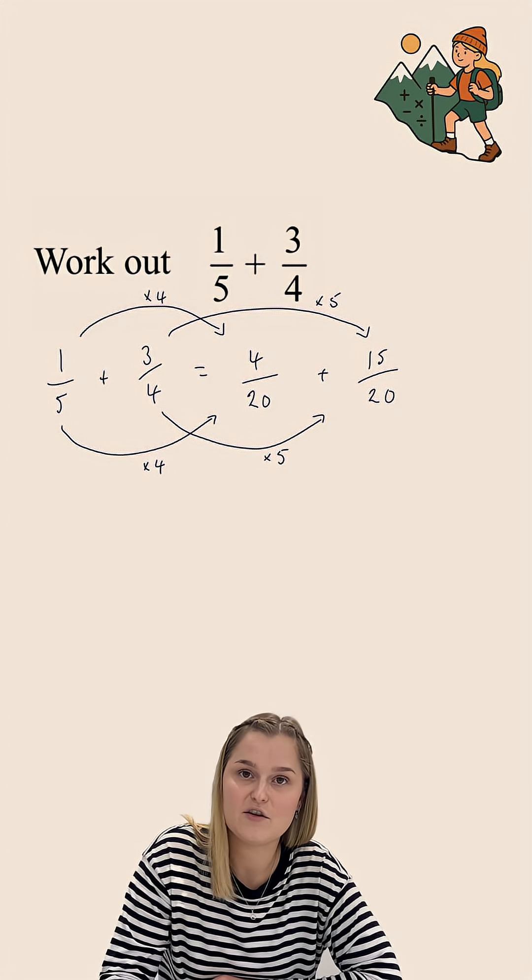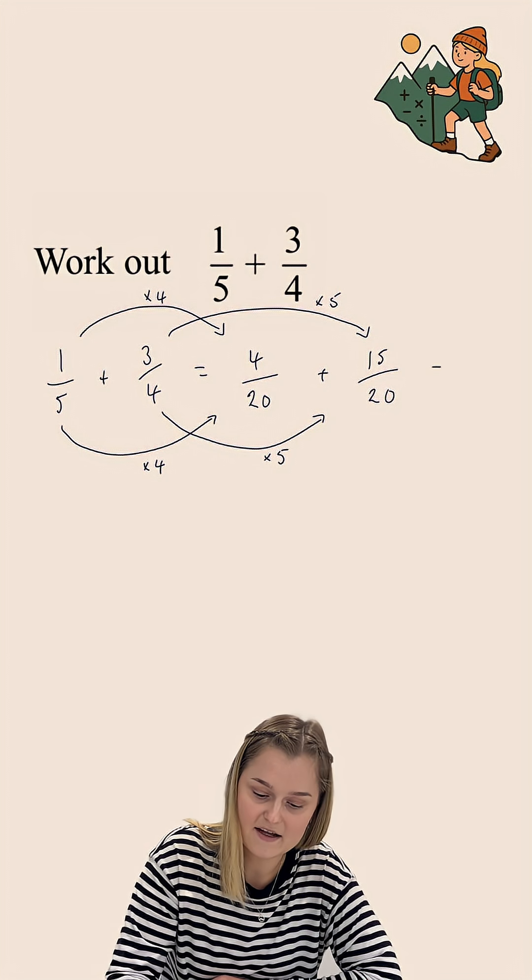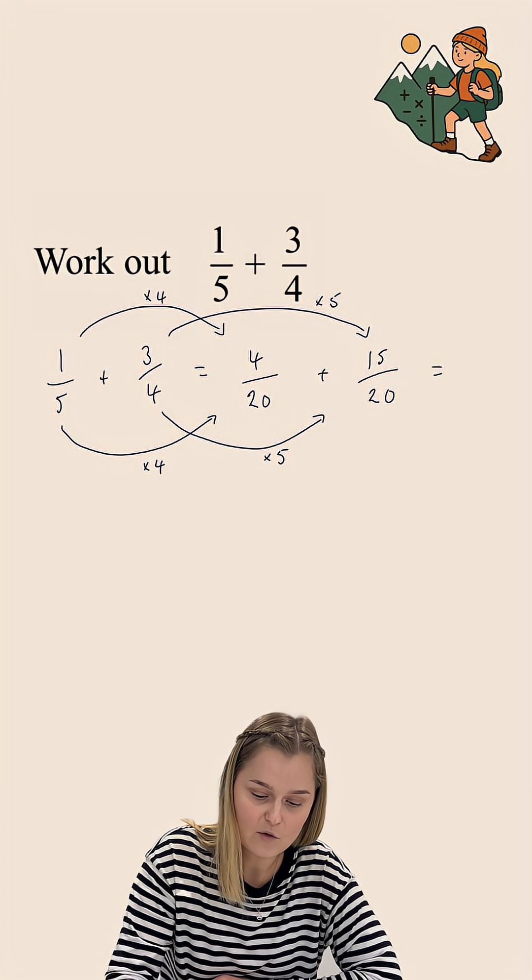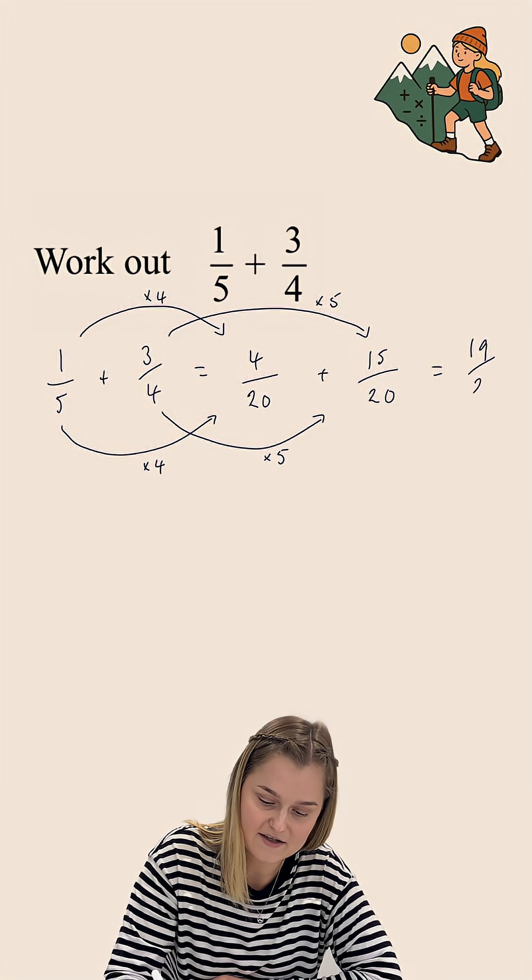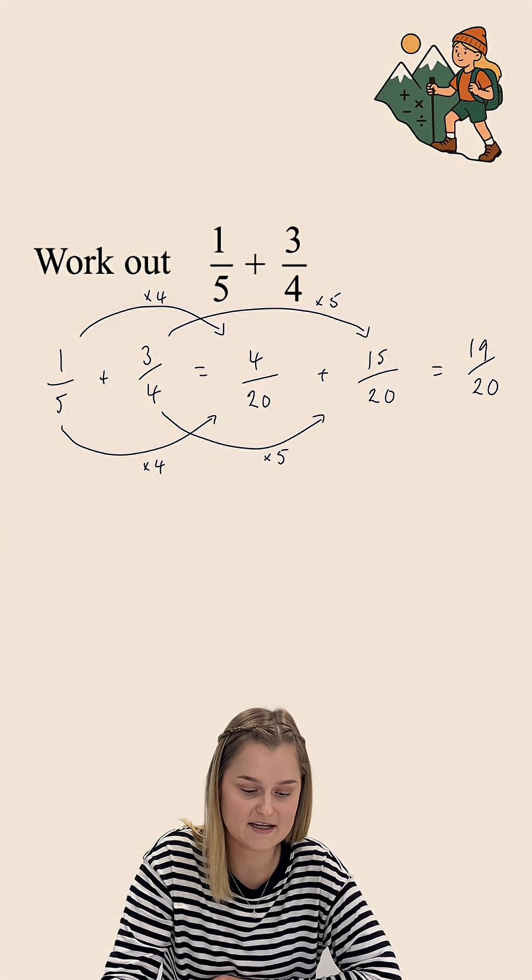we can just add the numerators together. The denominator stays the same. 4 plus 15 gives us 19. And my denominator stays as 20.